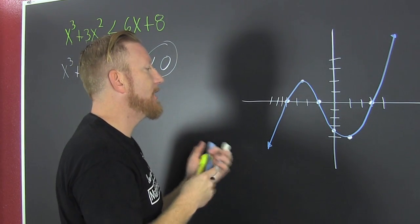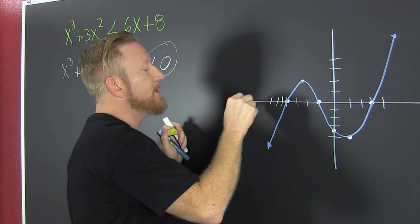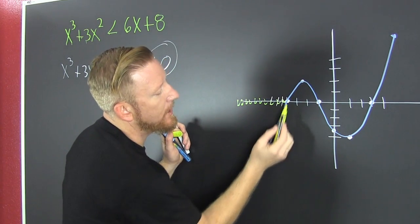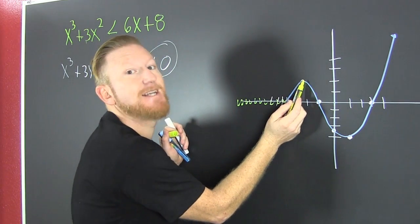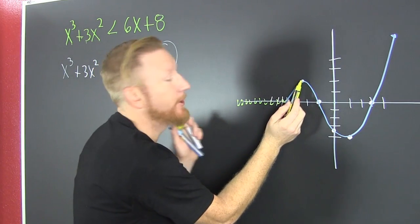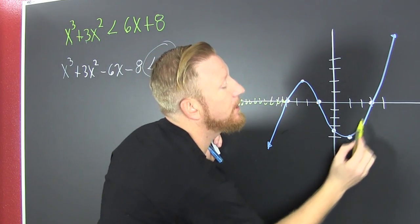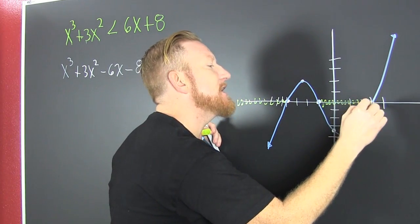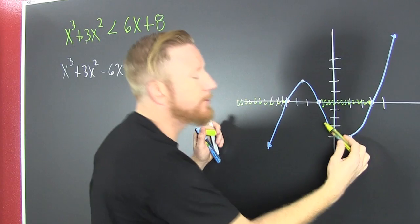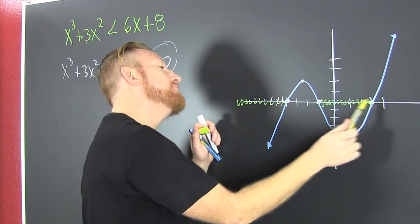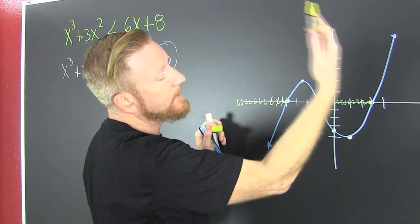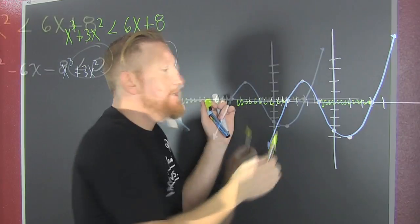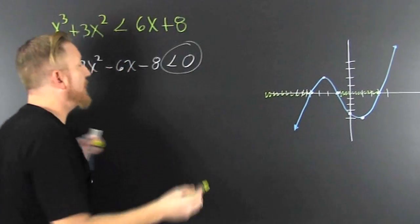Let me get a different color in there. These x values make that polynomial below the line. Look, the polynomial's above the line over there — that's not what we're looking for. We're looking for where the polynomial is below the line. So then we look and see: these x values make that polynomial below the line. But then over there, the polynomial's above the line. So we need a way to write this in interval notation.